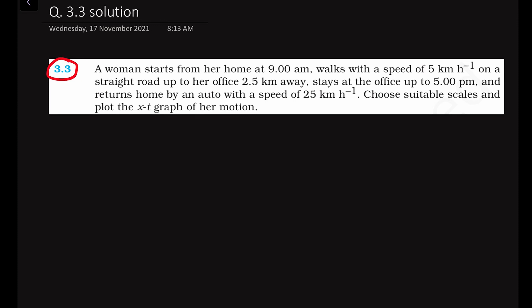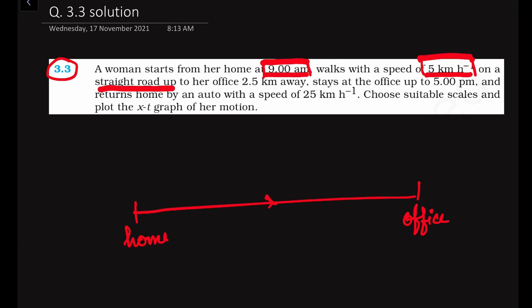In this problem, we are given that a woman starts from her home at 9 AM. She walks with a speed of 5 km per hour on a straight road from her home to the office. That means in one hour, she moves 5 km of distance.